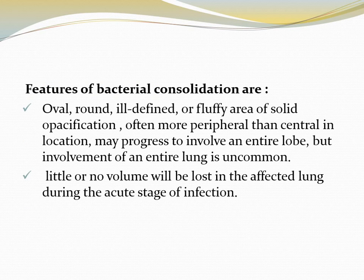The most common cause in the pediatric age is Streptococcus pneumoniae, while Haemophilus influenzae is dramatically reduced due to the use of the vaccine. Features of bacterial consolidation are oval, round, ill-defined, or fluffy area of solid opacification, often more peripheral than central in location, may progress to involve an entire lobe, but involvement of the entire lung is uncommon. Little or no volume will be lost in the affected lung during the acute stage of infection.